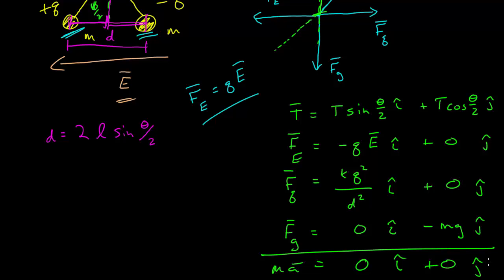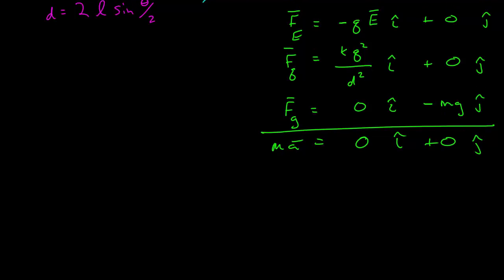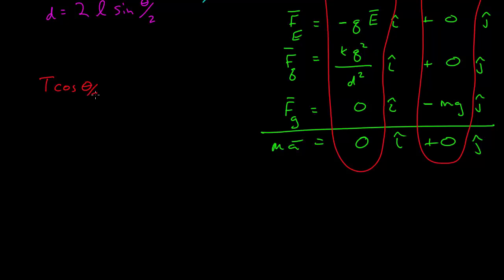And so everything is equal to zero. Alright, so if we now look at the components, here we've got two expressions. The y gives us T cosine theta over 2 is equal to mg minus mg is zero.